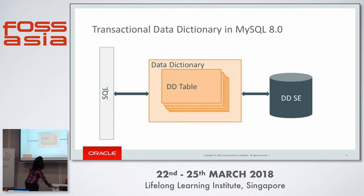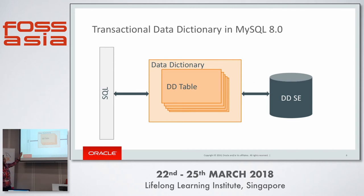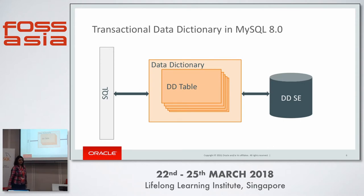But with 8.0, we removed all of this. We now have a centralized location where we store all our metadata information — InnoDB transactional tables. So all data dictionary information is stored in this centralized location, which actually helps us implement Atomic DDL.